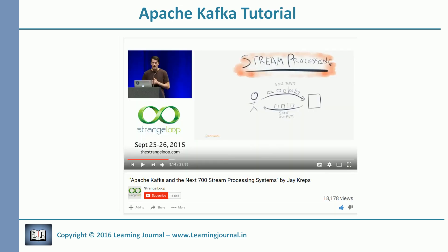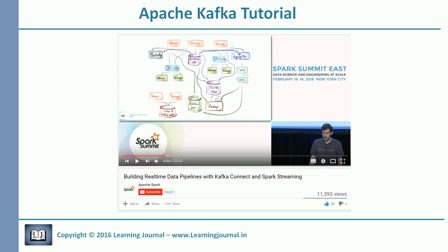The next video is again by Jay. In this video he talks about stream processing — the challenges in creating scalable stream processing systems and how Kafka addresses those problems. The next talk is by Ivan, a Kafka project committer who works with Jay at Confluent. He talks about Kafka Connect, and it's an engaging discussion about Kafka Connect capabilities that I'm sure you will enjoy.